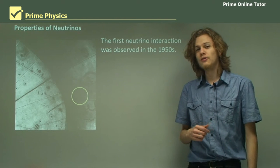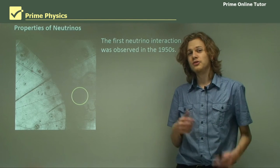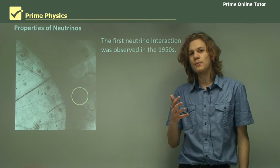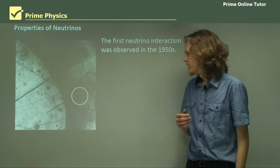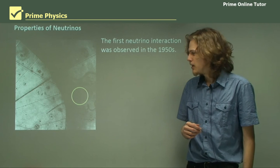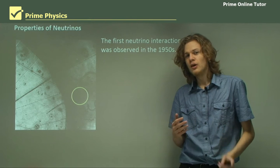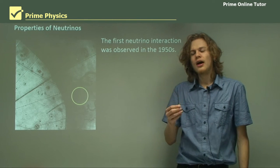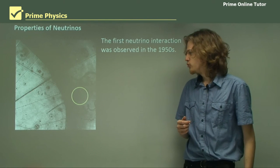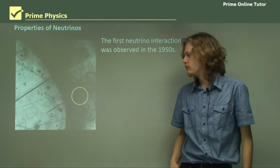The first neutrino interaction was observed in the 1950s, and it was very, very difficult to do. Neutrinos are chargeless, almost massless, and move very fast, so you're lucky if you manage to see even one. In this circled part of the diagram over here, you'll notice that there are two splitting lines coming out of nowhere. An invisible neutrino has struck a charged particle and caused it to start moving.